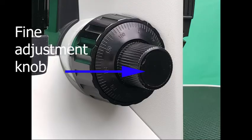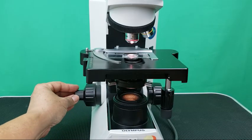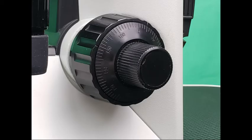Fine adjustment knobs: Two smaller knobs on either side of the base of the arm, usually located in the center of each coarse adjustment knob. The fine adjustment knobs yield extremely small movements of the stage for very precise focusing.